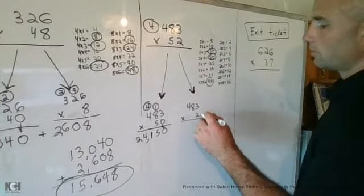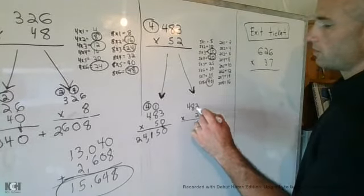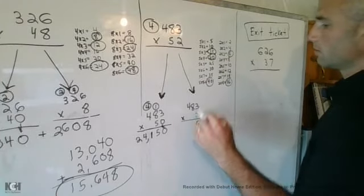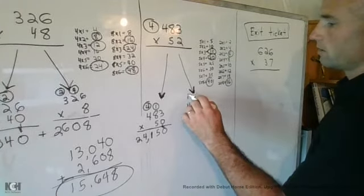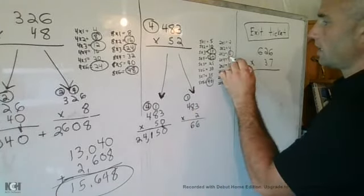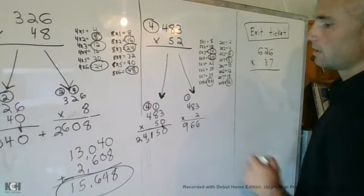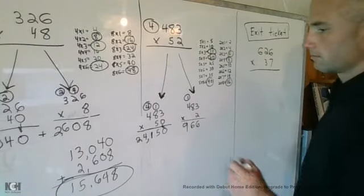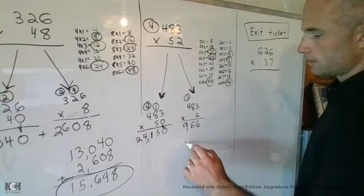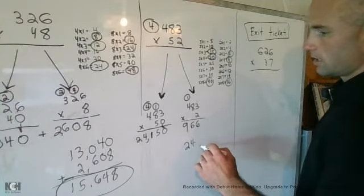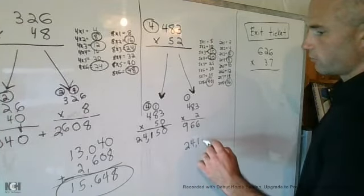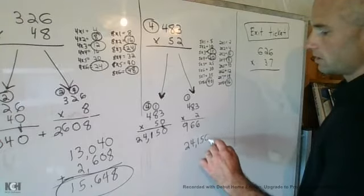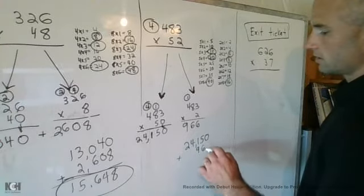Next, I'll do 2 times 3 is 6. 2 times 8 is 16. Carry the 1. 4 times 2 is 8, plus 1 is 9: 966. Last but not least, I'll add the 2 answers up: 24,150 plus 966.